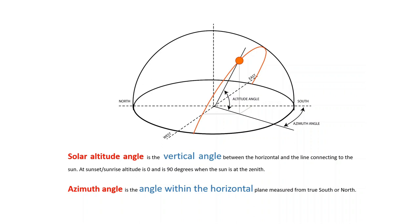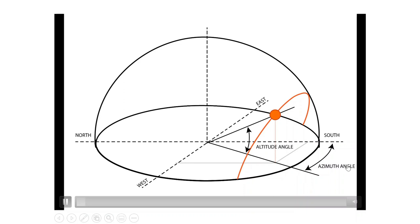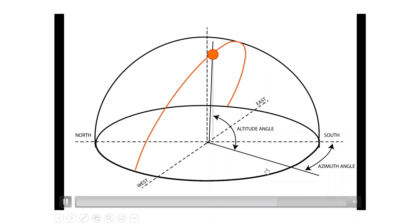In this animation, let's see how the altitude angle and azimuth angle measurements change when the position of the sun changes. Here, this is the altitude angle. Now when the sun's position changes, this is the altitude angle. In all the cases, azimuth angle is the same.